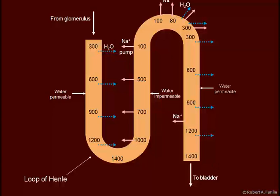Now, with humans, 1200 or 1400 seems to be our maximum concentrating ability. There are some desert rodents, like the kangaroo rat, that can concentrate their urine well over 2000 milliosmoles per liter.